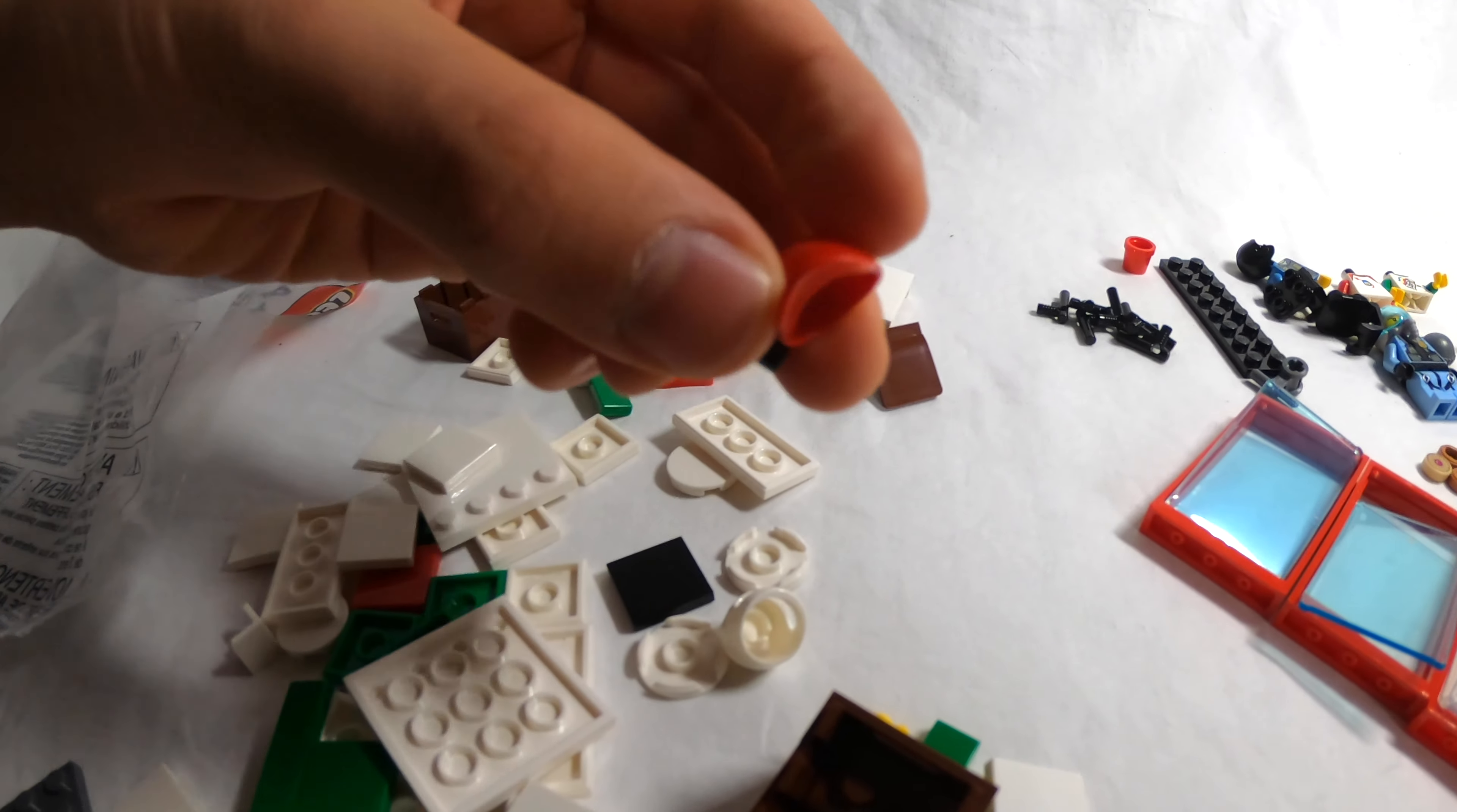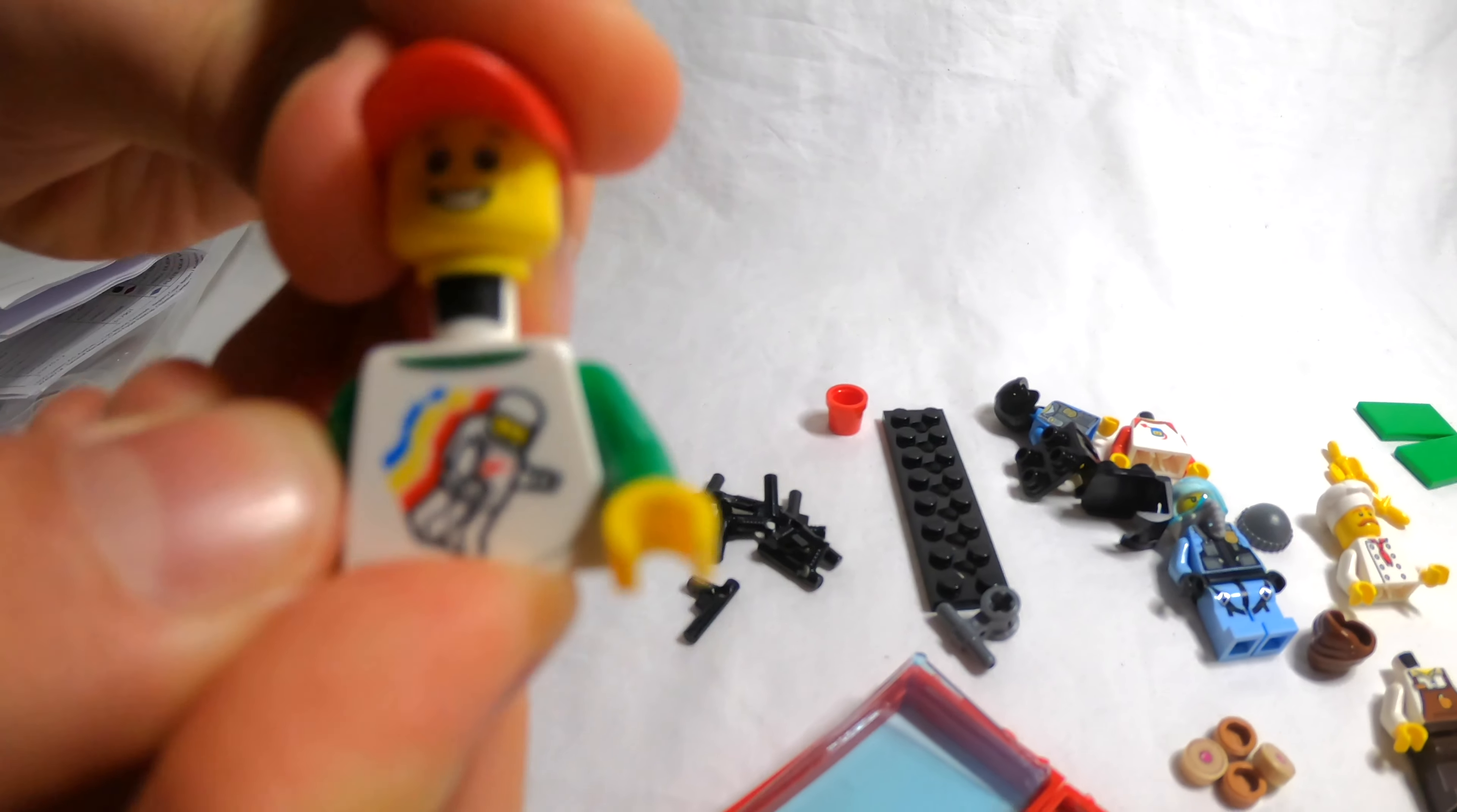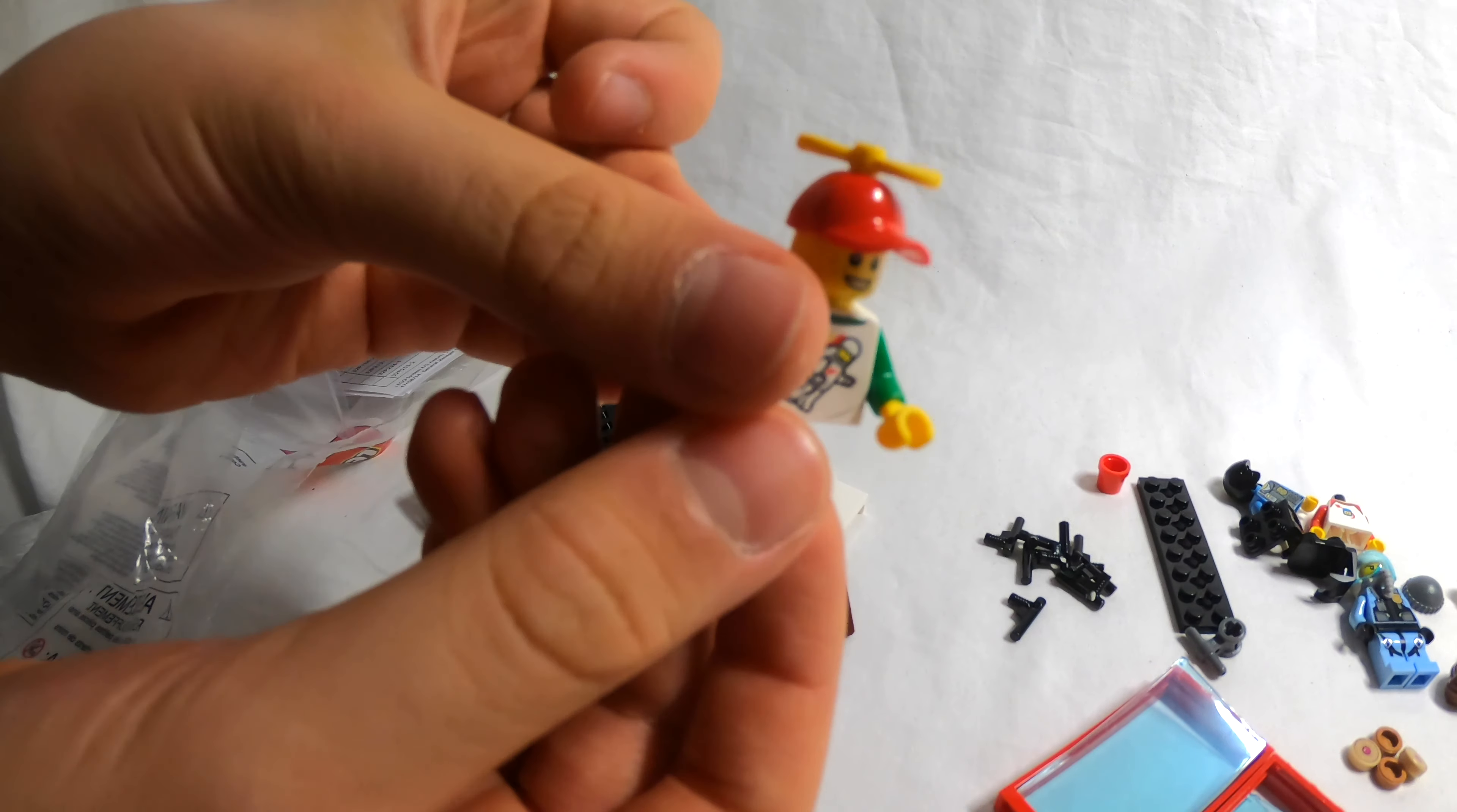Next, we've got a hat, which will be for someone in our city. We also got a kid face. And he'll probably go on one of those bodies I showed you earlier. So, let's grab one. Stick that on. Nice and good. There you go. Also, the propeller can go in the hole in the hat. So, he's got, like, a propeller hat now. It's really cool.